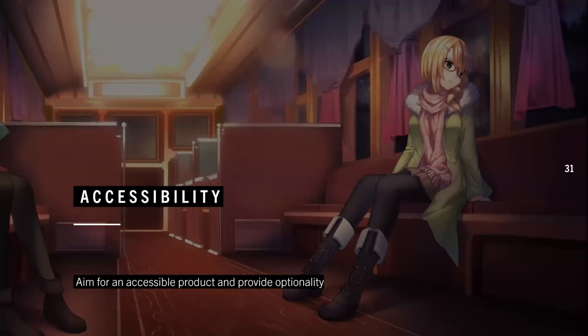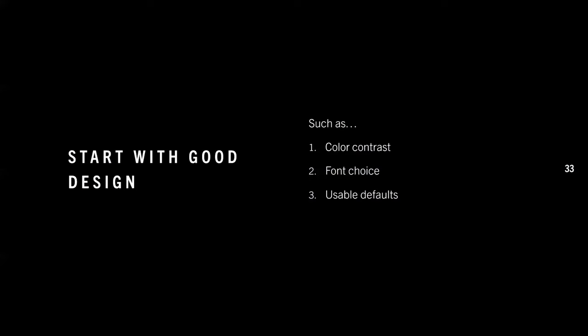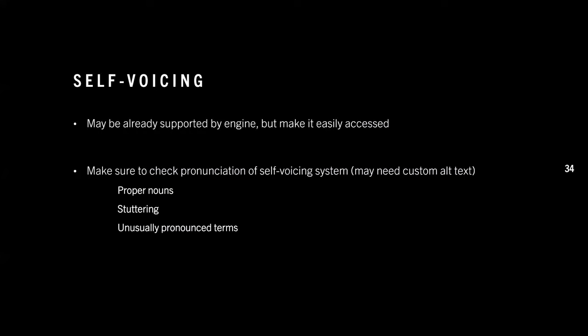Next, let's talk about accessibility. When making a VN you should aim for an accessible product and also provide optionality — accessibility options are often provided in config screens or first-time splash screens. When thinking about making your visual novel more accessible, this is perhaps obvious advice, but start with a good design. I won't go deep into color contrast, font choices, or usable defaults, but just start with something people can actually read.